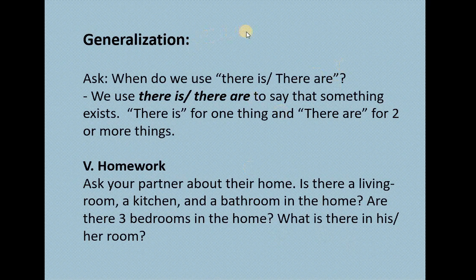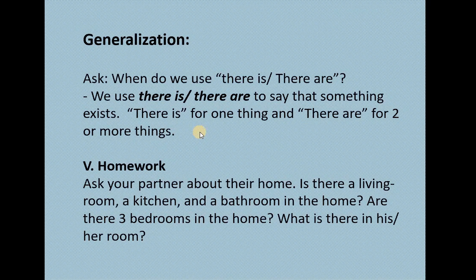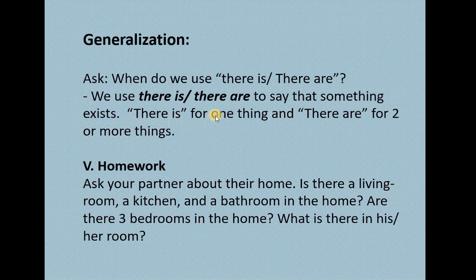Let's move on to generalization. Ask the students: when do we use 'there is'? When do we use 'there are'? We use 'there is' and 'there are' to say that something exists — 'there is' for one thing and 'there are' for two or more things. Have the students read this by whole class, by groups, by rows, and by individual students. Write your generalization on the board.